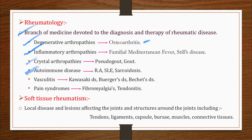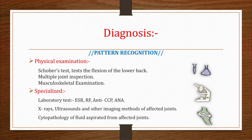Autoimmune diseases include rheumatoid arthritis (RA), systemic lupus erythematosus (SLE), and sarcoidosis. Vasculitis includes Kawasaki disease, Buerger's disease, and Behçet's disease. Pain syndromes include fibromyalgia and tendonitis. There is also soft tissue rheumatism — a local disease affecting joints and surrounding structures including tendons, ligaments, capsules, bursae, muscles, and connective tissues.